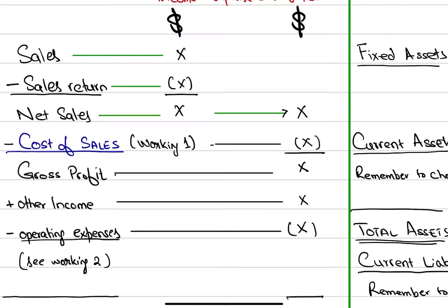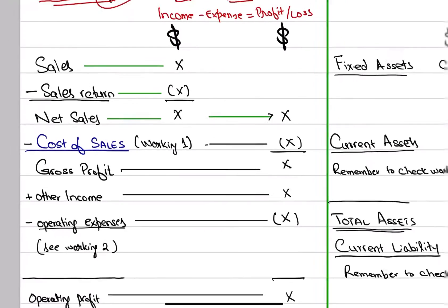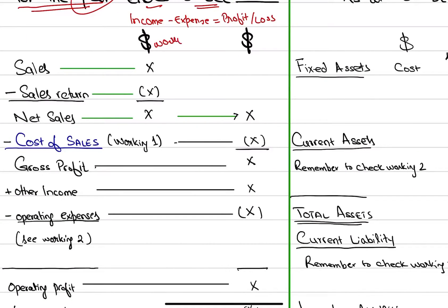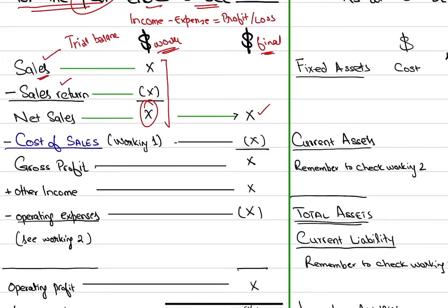The starting point is sales, and we subtract sales returns to get net sales. There are two columns: we call them the working column and the final column. All workings go in the working column and final numbers are transferred to the final column. We say the company has sold — how much did it sell? That is total sales. After returns, the company has net sales. This information comes from the trial balance. Sales is income, so in the trial balance it will be on the credit side.